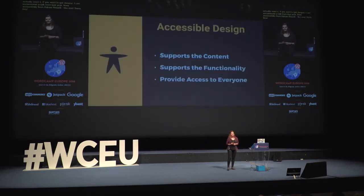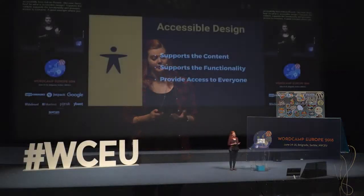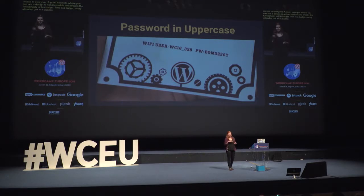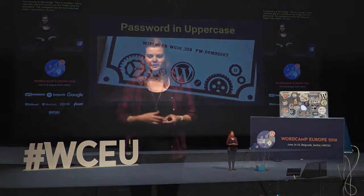What is accessible design? Accessible design supports the content, supports the functionality, and provides access to everyone. A good example of where design is not accessible and breaks functionality is this badge from a WordCamp several years ago. Every attendee got Wi-Fi access on the badge, including a password. The password contained lower and uppercase letters, but the font used only displayed uppercase, so you couldn't use the password or even guess it. The WordCamp team had to reprint all the badges with a font that wasn't uppercase-only. Please always keep in mind that design has to support functionality.